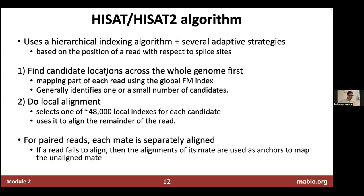HISAT uses a hierarchical indexing algorithm with several adaptive strategies based on a read's position relative to splice sites. It first finds candidate locations across the whole genome using the global index, usually giving one or a few candidate locations, then switches to local alignment using local indexes — one big global index and 48,000 local indexes. For paired reads, each mate is mapped separately; if a read fails to align, the mate's alignment can be used to anchor and recover it.